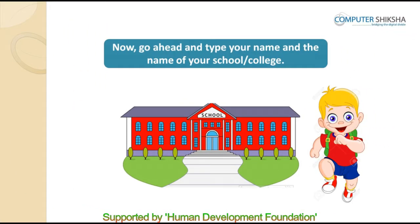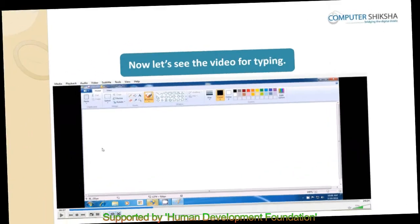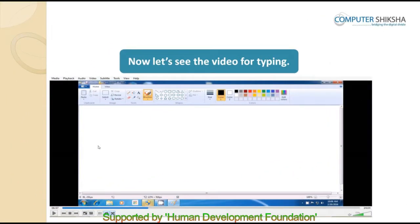Let us now begin typing with the text tool. Go ahead and type your name and the name of your school within this box. You should type your name in the first line and then type your school's name in the next line. Remember that to go to the next line, you will need to press the enter key once. If you have any problems, watch the video — it will help you do it correctly.